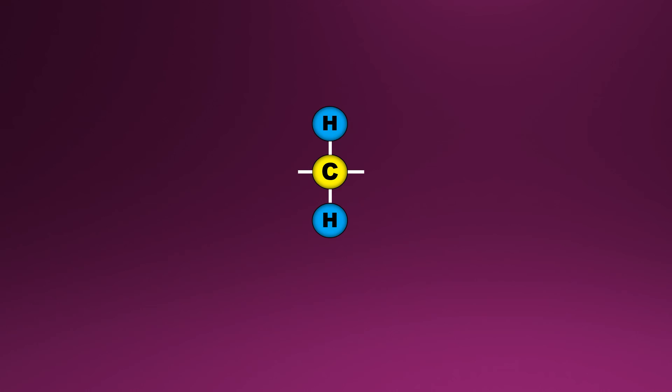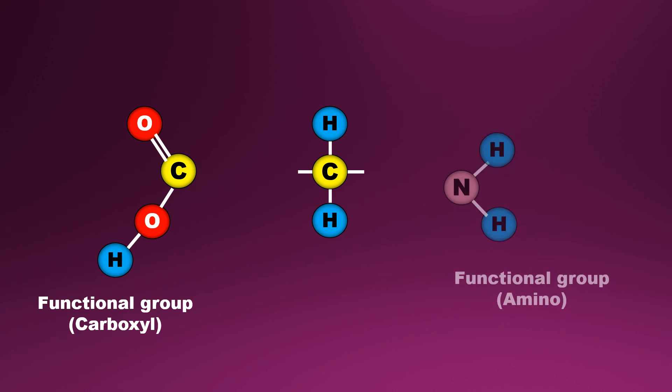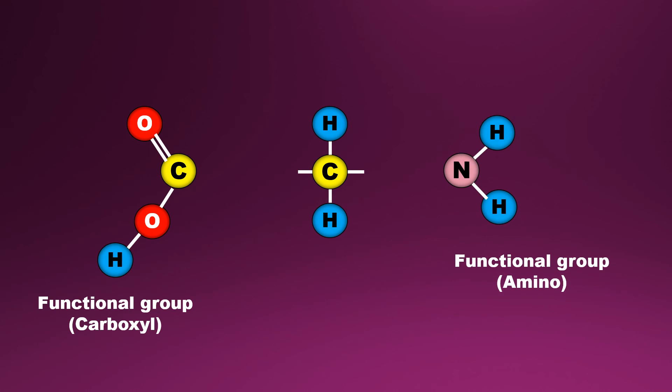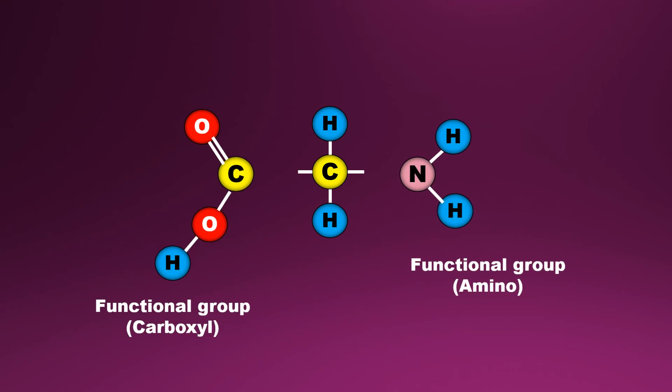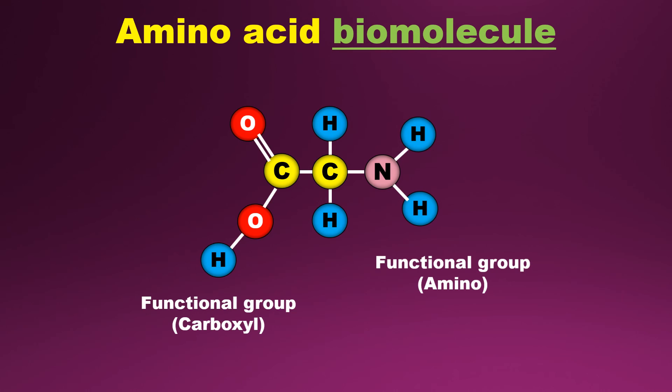Let's see another example. Here we are using two functional groups. One is carboxyl group and another is amino group. When these both are combined with carbon skeleton, we will get amino acid biomolecules. Same question here also. Why biomolecule word? Because amino acid means proteins, which are eggs, meat, pulses, etc. And these all are based on biological based molecules. That's why we are using biomolecules.